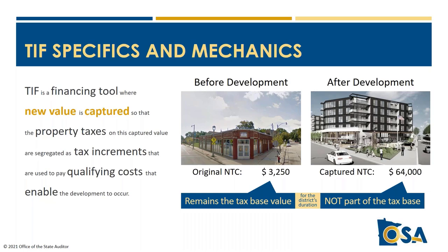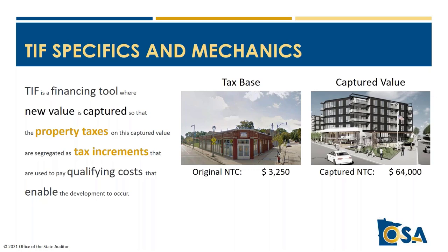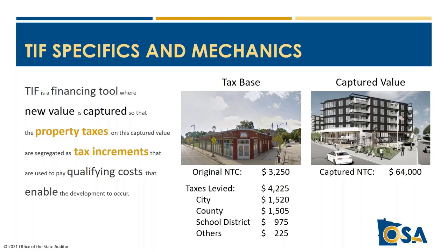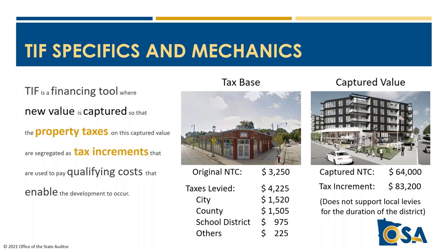The property taxes on captured value are segregated as tax increments. In this example, $4,225 of taxes are levied on the original net tax capacity of $3,250 — the sum of individual levies by local taxing jurisdiction, which largely stays consistent for the district's duration. But extending the tax rate on the captured value raises $83,200 of increment each year, and these additional taxes finance the development costs.